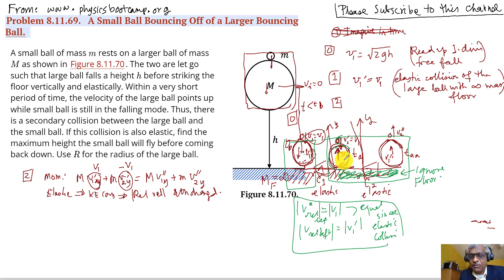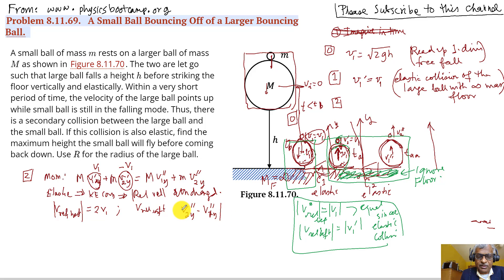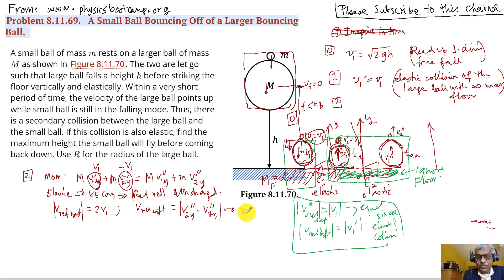For elastic collision, the magnitude of the relative velocity is unchanged. Before the collision the two balls are approaching each other, so the relative velocity magnitude is 2V1. After the collision, taking both as positive, the relative velocity is V2_double_prime_Y minus V1_double_prime_Y, and this must equal 2V1. Assuming V2_double_prime_Y > V1_double_prime_Y, we can remove the absolute value and write: V2_double_prime_Y - V1_double_prime_Y = 2V1.